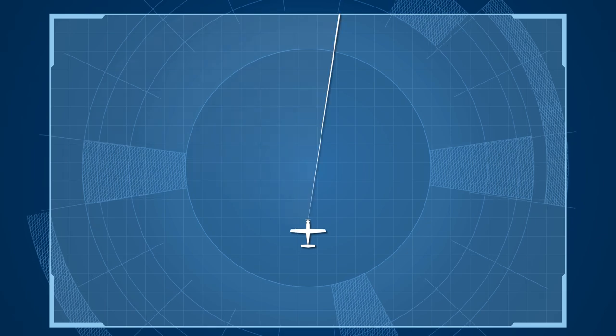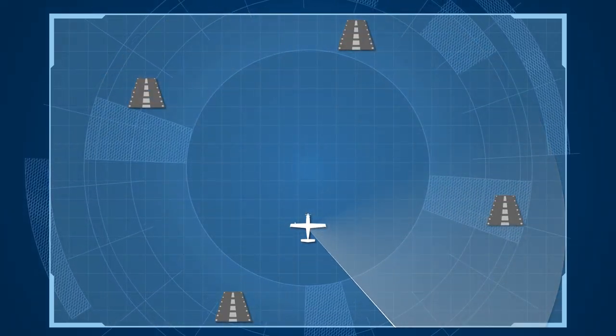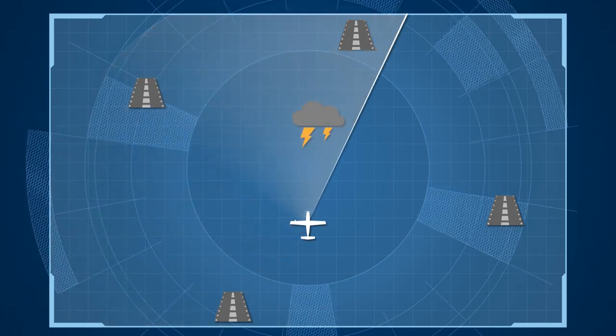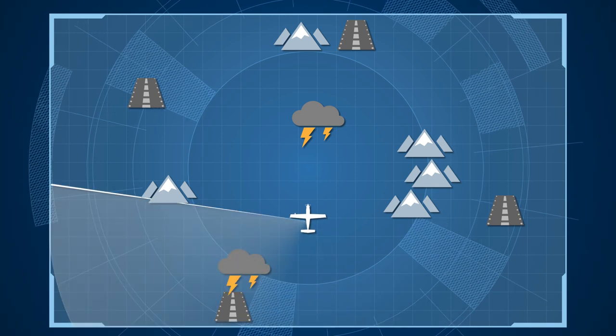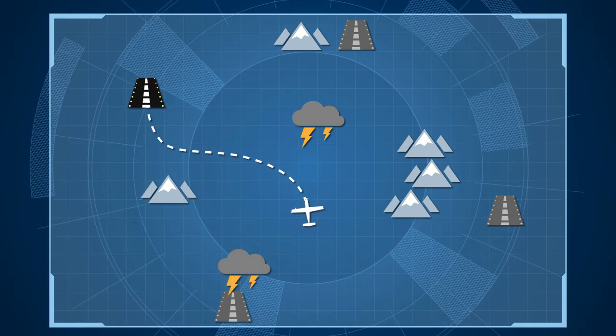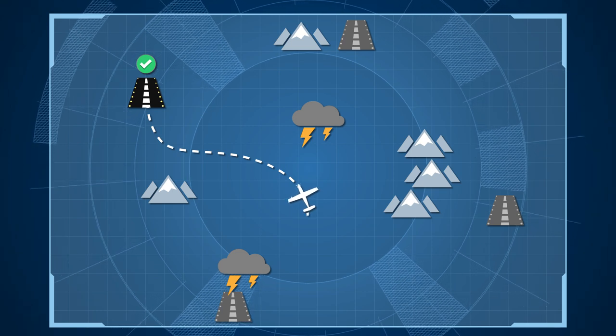Once engaged, HomeSafe will immediately start searching for an adequate destination to land. Taking weather conditions and the surrounding environment into consideration, the airplane will determine the optimal landing field. When selected, the airplane will start maneuvering in order to reach this destination.